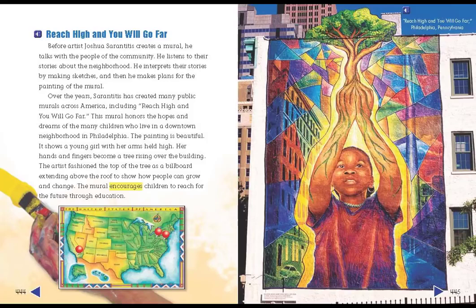Reach High and You Will Go Far. Before artist Joshua Serentitus creates a mural, he talks with the people of the community. He listens to their stories about the neighborhood. He interprets their stories by making sketches, and then he makes plans for the painting of the mural. Over the years, Serentitus has created many public murals across America, including Reach High and You Will Go Far.